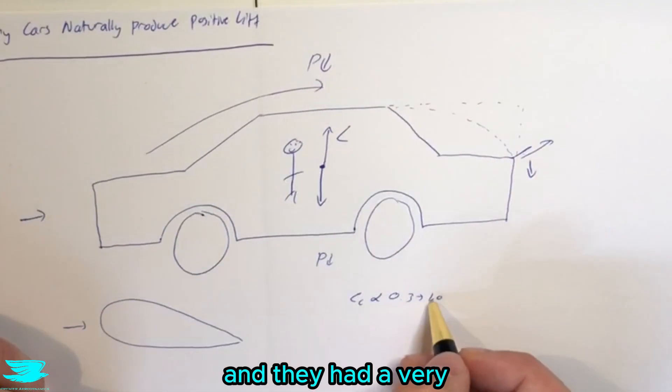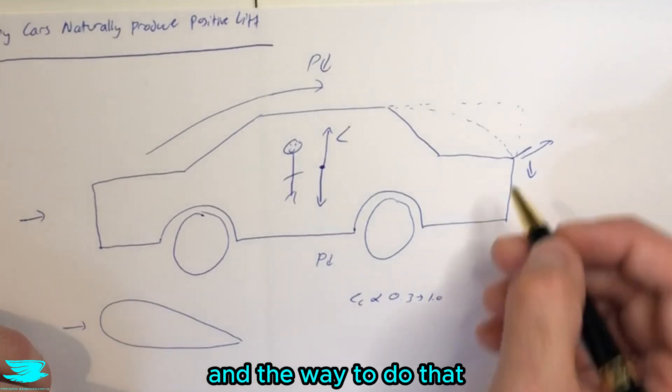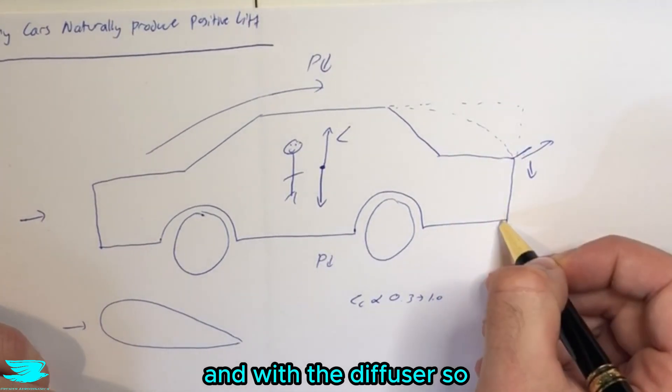they looked pretty much just like wings. And they had a very high lift coefficient. Now we're getting them down quite low. And the way to do that is often with the spoiler and with the diffuser.